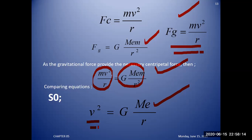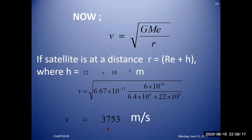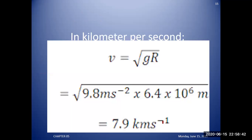You are calculating the amount of velocity required to move the object in its orbit. Putting in all the values — G, M_e, and r — you get a speed of approximately 3,753 miles per second. This is the speed a satellite requires to move in orbit. The minimum velocity required to keep a satellite in its orbit is 7.9 km/s.